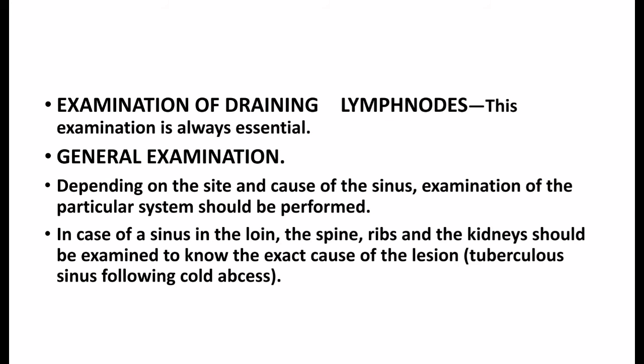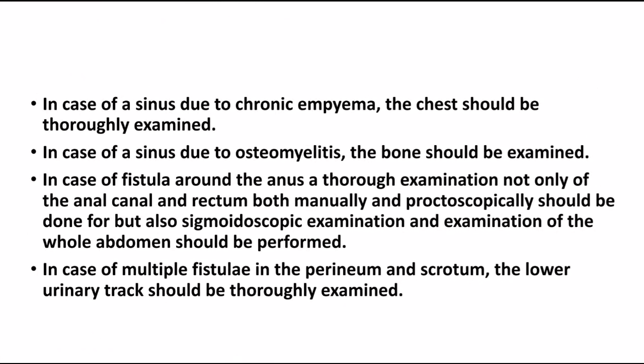General examination: depending on the site and course of the sinus, the relevant system should be examined. For a sinus in the loin, the spine, ribs, and kidneys should be examined — for example, in tubercular sinus following cold abscess. For a sinus due to chronic empyema, the chest should be thoroughly examined. For a sinus due to osteomyelitis, the bone should be examined. For fistula around the anus, examination of the anal canal, rectum (manually and proctoscopically), sigmoidoscopy, and examination of the whole abdomen should be performed. For multiple fistulae in the perineum and scrotum, the lower urinary tract should be thoroughly examined.